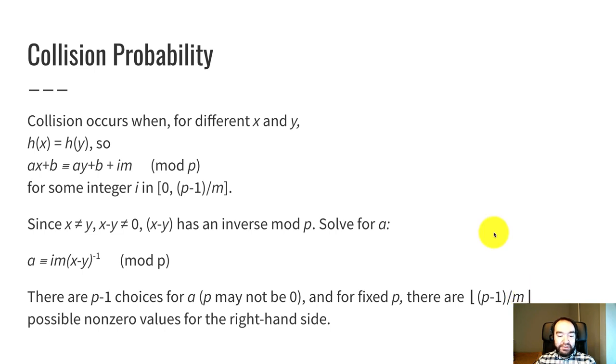So on the left-hand side, there are P minus one possibilities. And on the right-hand side, there is this expression, non-zero values.